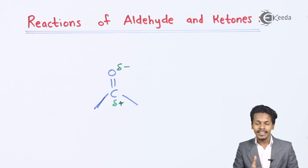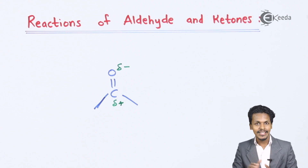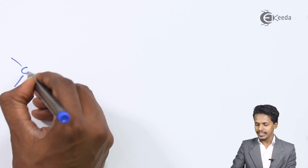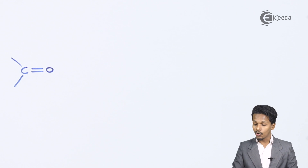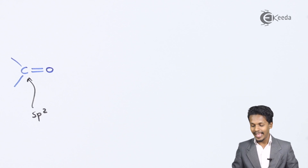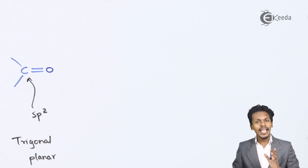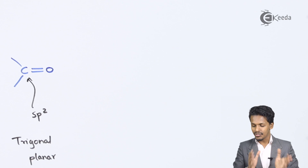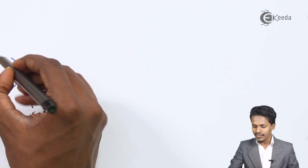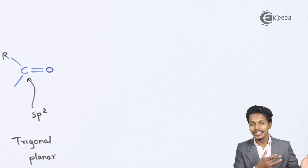Now let us come back to how aldehydes and ketones undergo nucleophilic addition. The carbon atom in the carbonyl group undergoes sp2 hybridization, and that is why the structure of the aldehyde or ketone is trigonal planar. Because of this sp2 hybridization, all bond angles — for example the R–C–O angle — are 120 degrees, as we have discussed earlier.